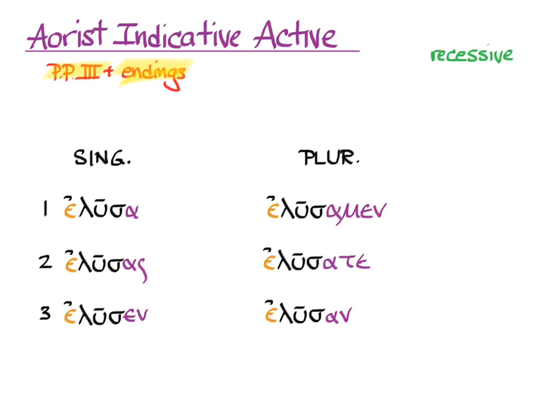Now we're going to do recessive accent on all of those nice verbs. Remember that all we need to do is look at the last syllable and see if it's long or short to decide where to put the accent. So elusa, that's a short alpha, and so we go one, two, three and put the accent on the third to last. Short, one, two, three, accent on the third to last. Short, one, two, three, accent on the third to last.